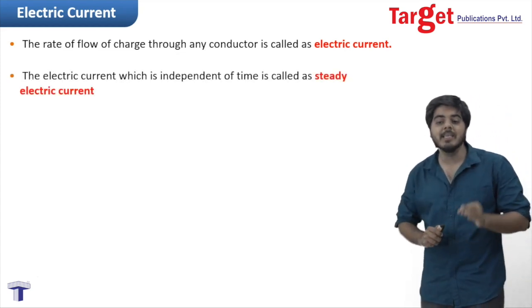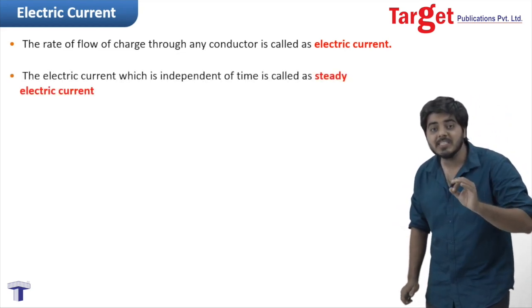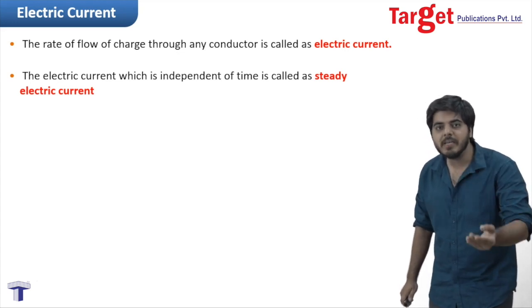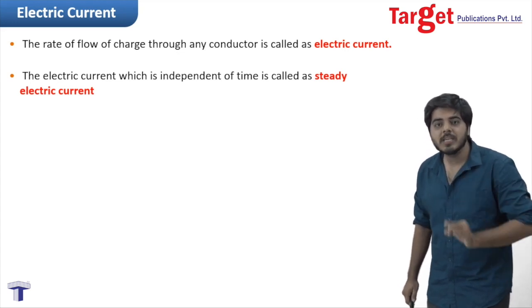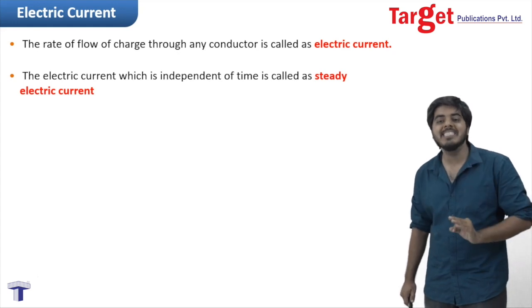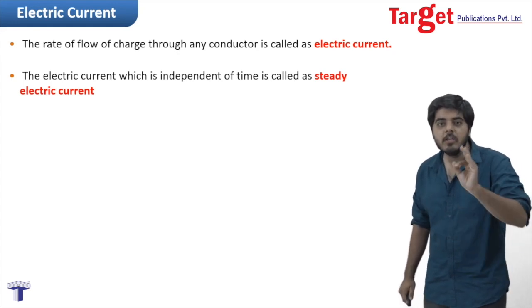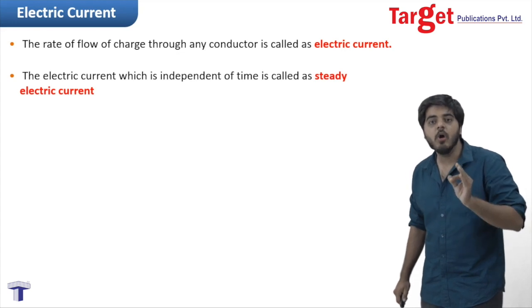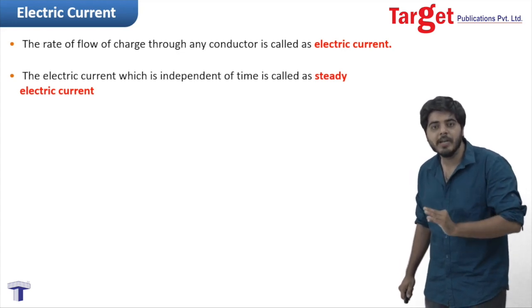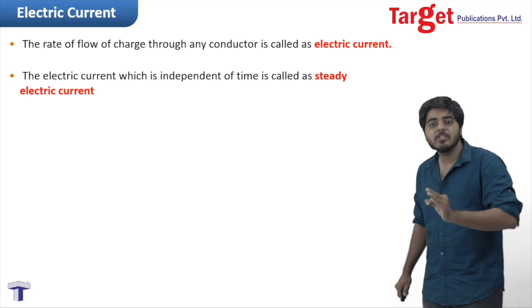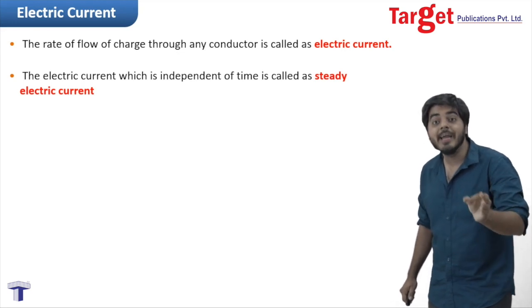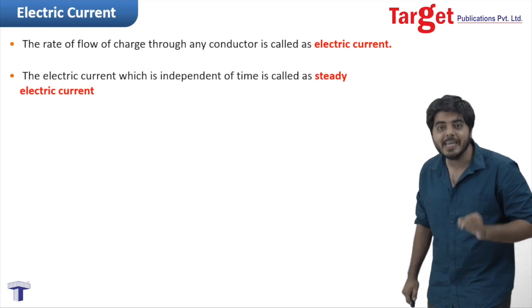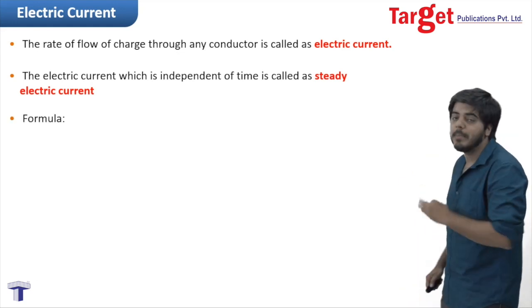The electric current which is independent of time is called steady electric current. So: the rate of flow of charge per unit time through a conductor is called electric current, and the electric current which is independent of time is called steady current.